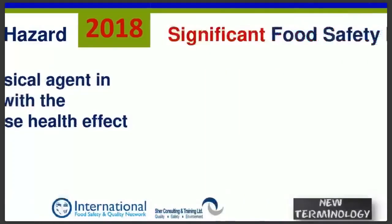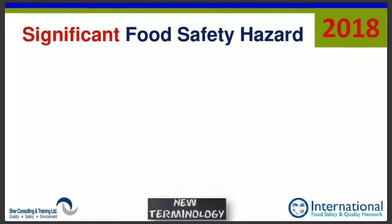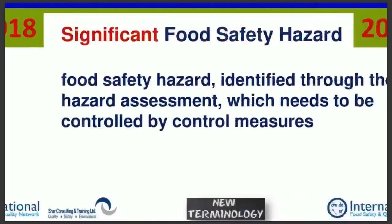New 2018 term: 'significant food safety hazard.' A significant food safety hazard is a food safety hazard identified through the hazard assessment that needs to be controlled by control measures. This was always part of the process — we identified hazards, did a risk assessment, and chose which ones were significant — but now it has a name. The excitement is in the use of the word 'control measures,' which now has a new meaning.